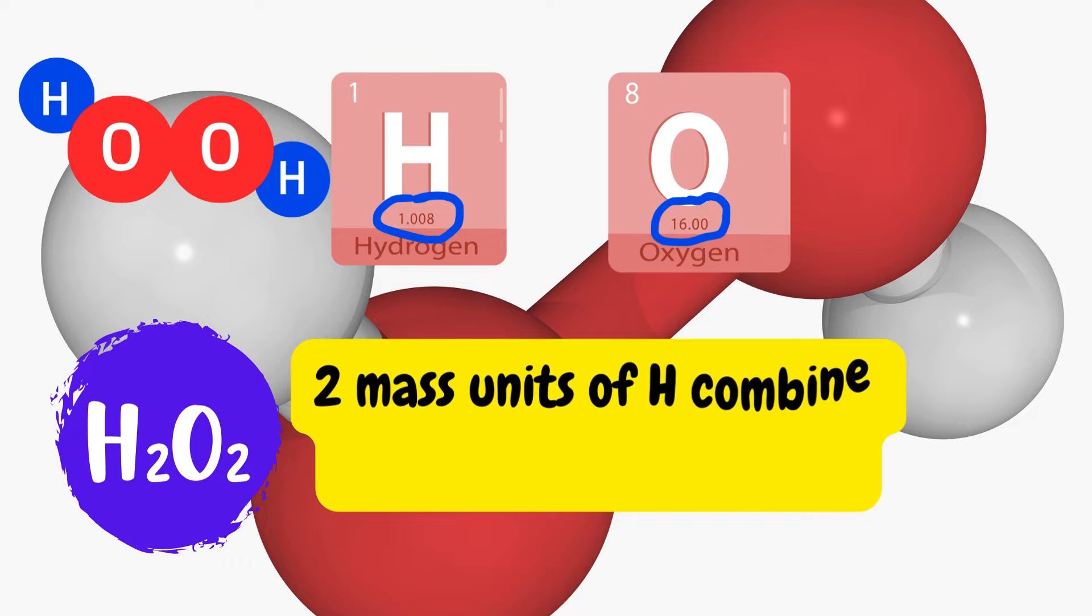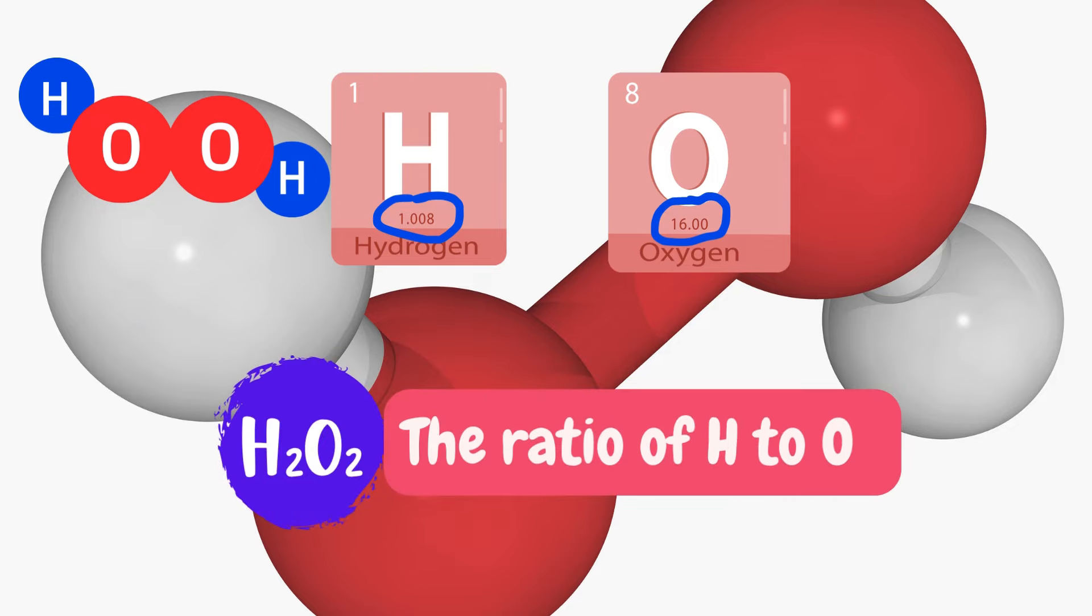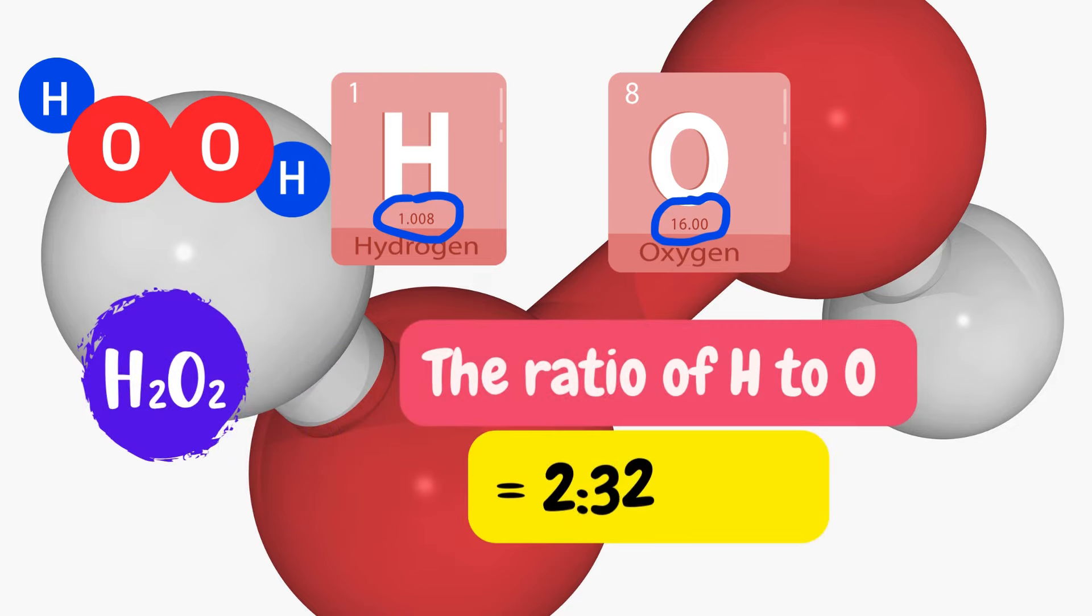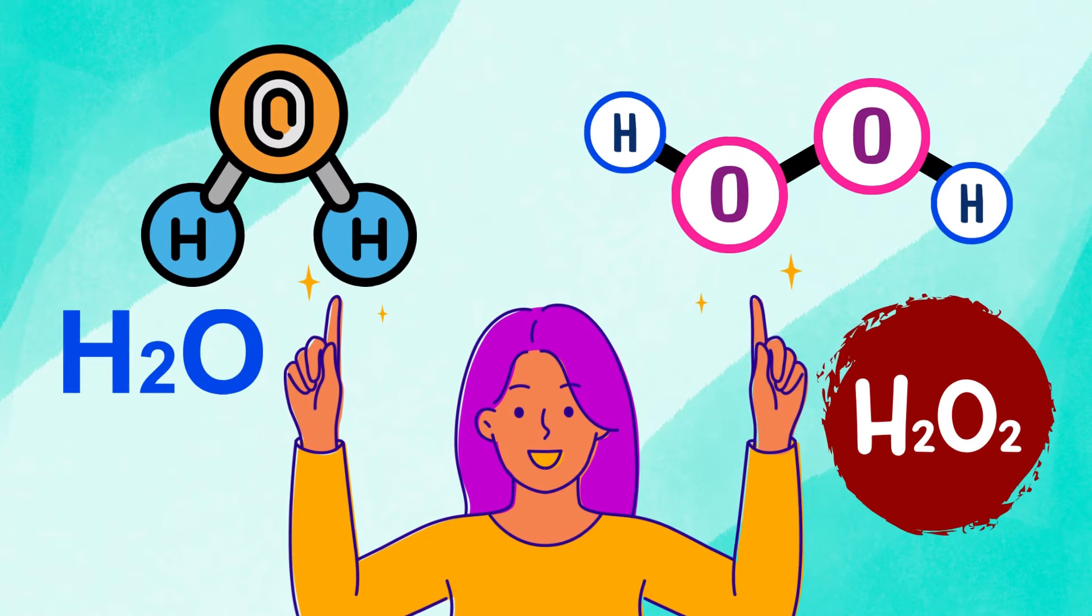In hydrogen peroxide, two units of hydrogen combine with 32 units of oxygen. So the ratio of hydrogen to oxygen in H2O2 would be 2 to 32, which equals 1 to 16.